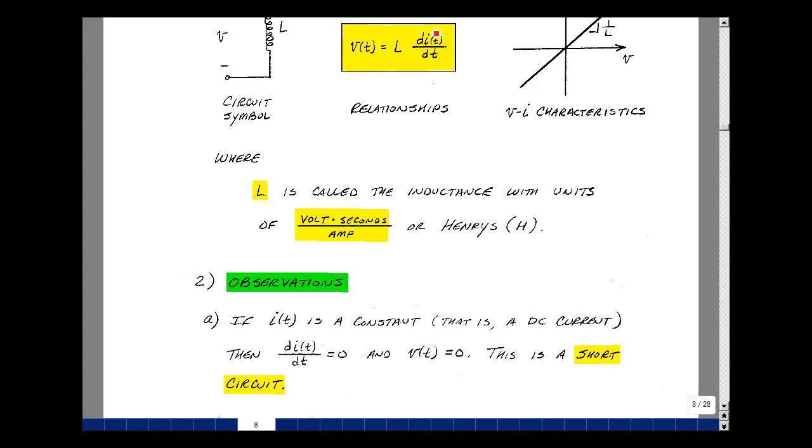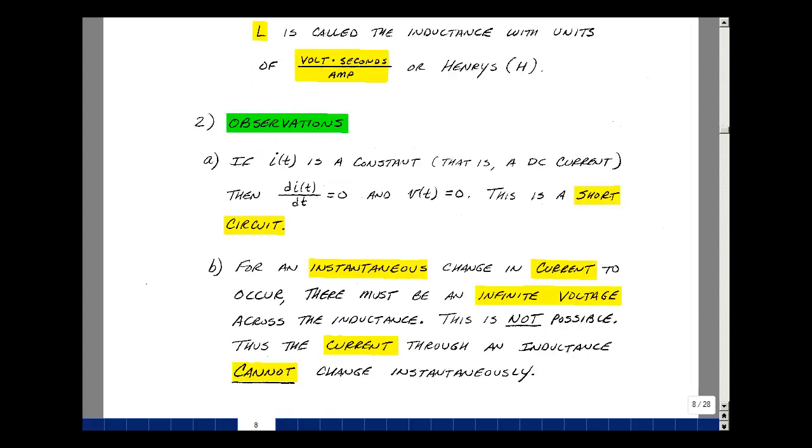The second observation would be this derivative. If we were to allow the current to change rapidly or instantaneously, that would imply that the slope is equal to infinity. To get the current to jump quickly or instantaneously, the voltage has to approach infinity. But it's not possible to create an infinite voltage, so we can say that the current through an inductance cannot change instantaneously. We're going to use this as a boundary condition in solving a differential equation later in the chapter.